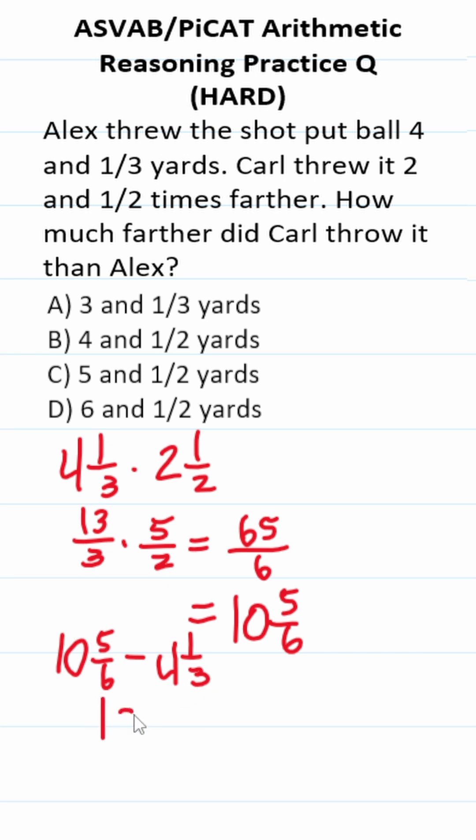Let's make this easier by rewriting 4 1/3 to be in terms of sixths. To do that, we multiply by 2. This becomes 4 2/6.